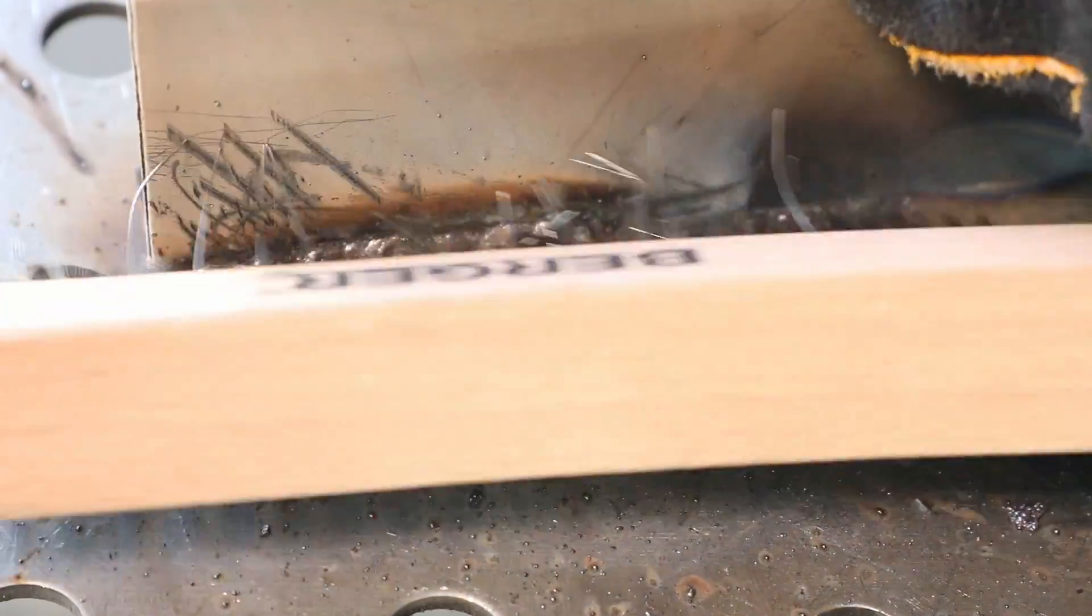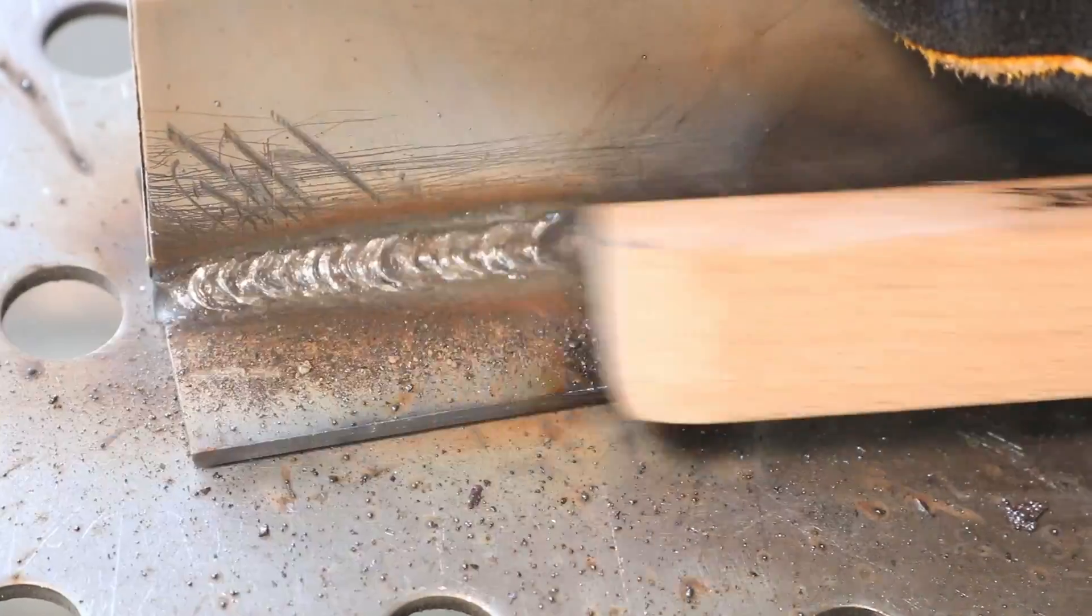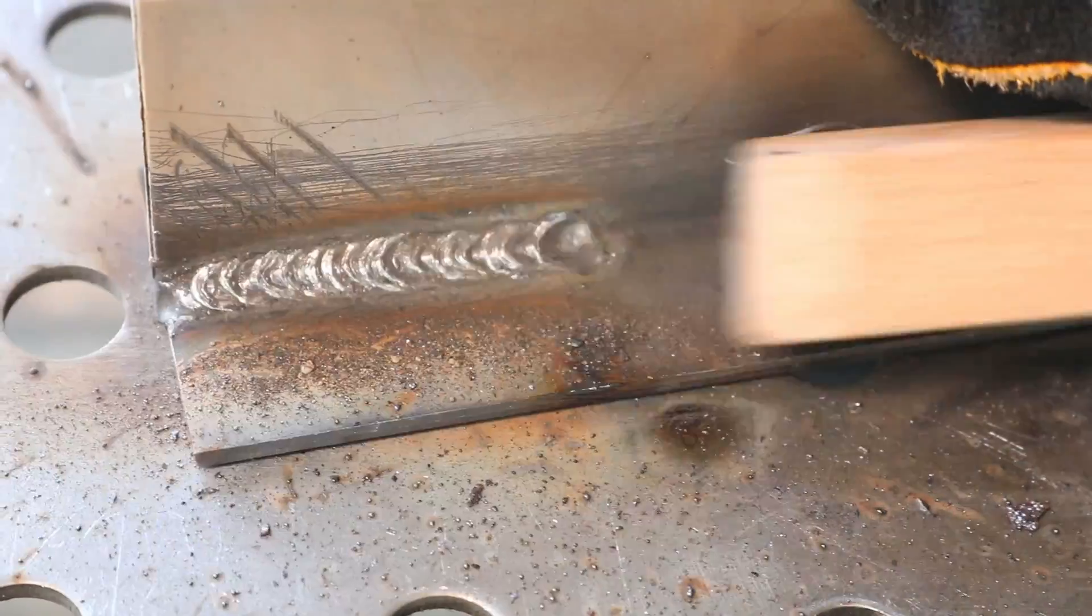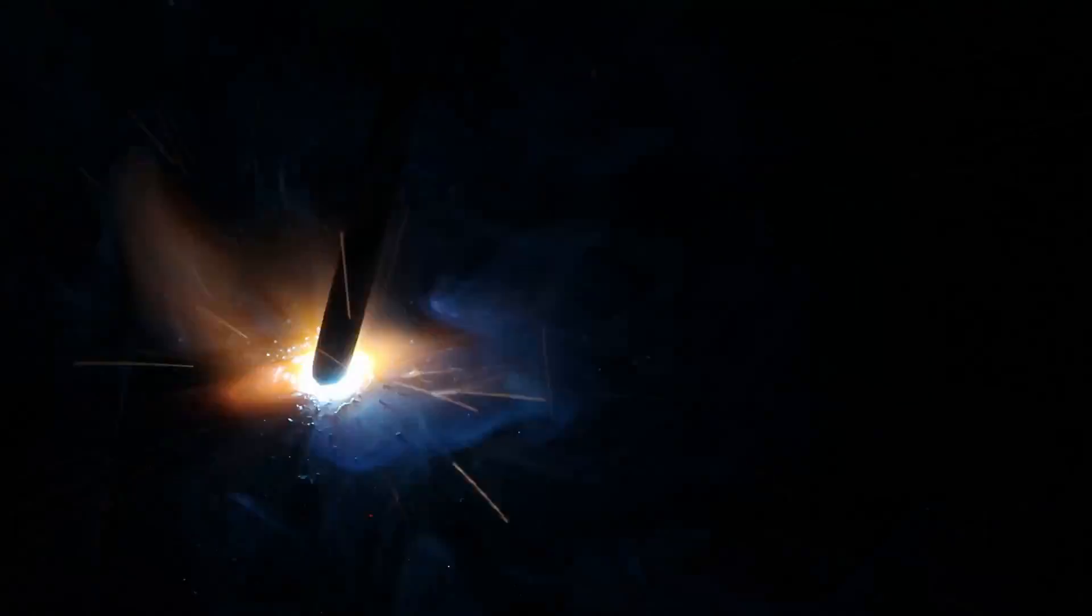Here, I'm just demonstrating a fillet weld with 6011. I'm using that same whip and pause technique to be able to fill it in and show how you might do that. And I'll just clean some of the slag off here just a little bit to be able to show the idea. And you can see it comes out pretty well.